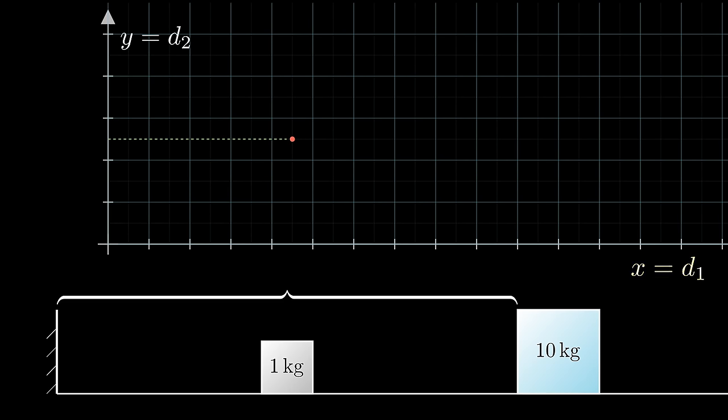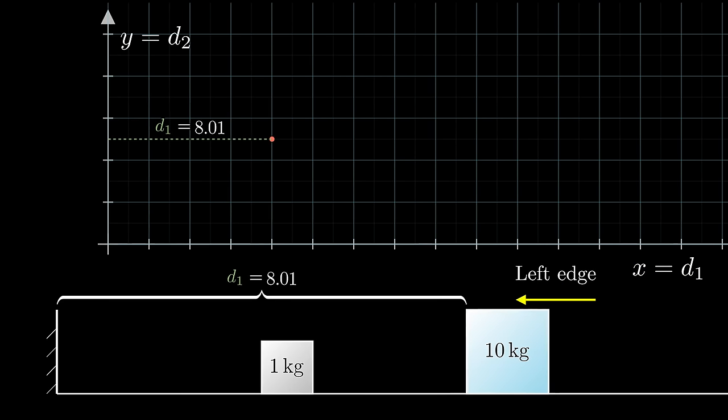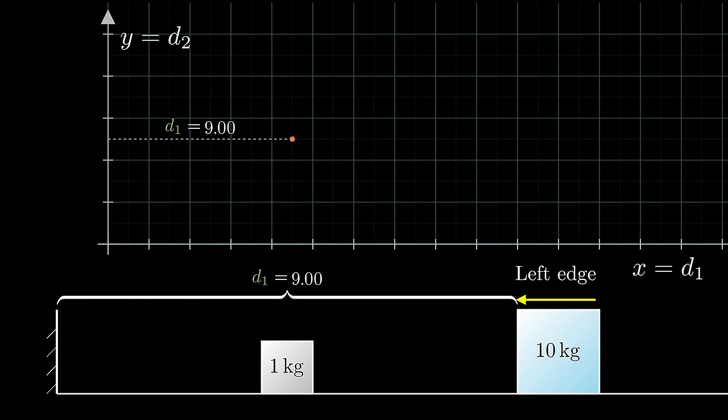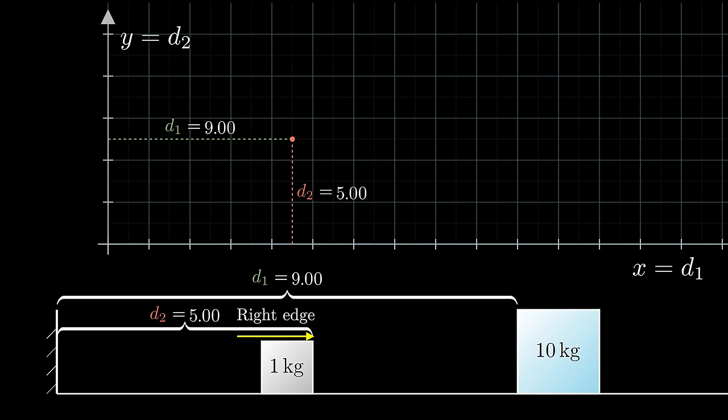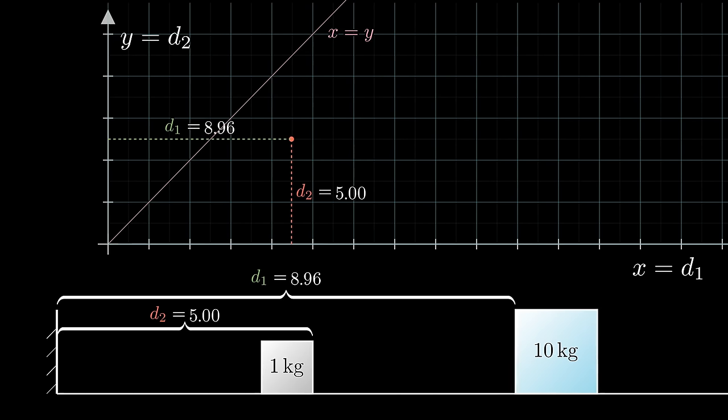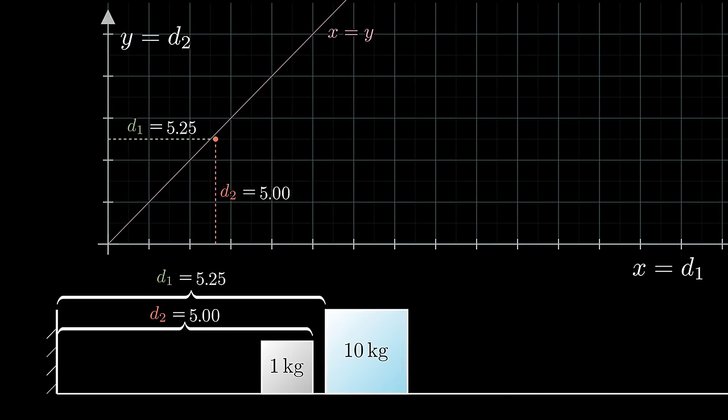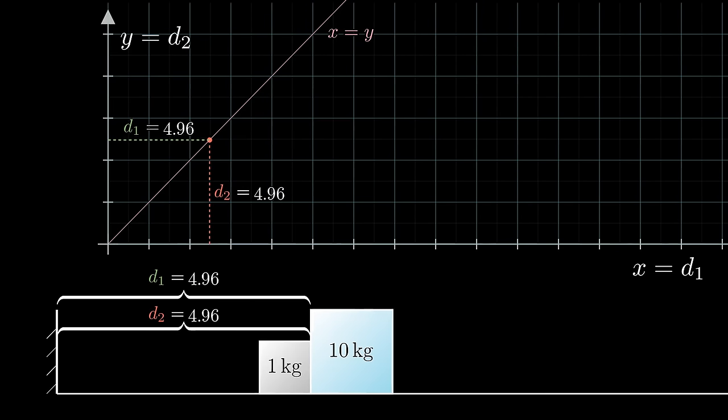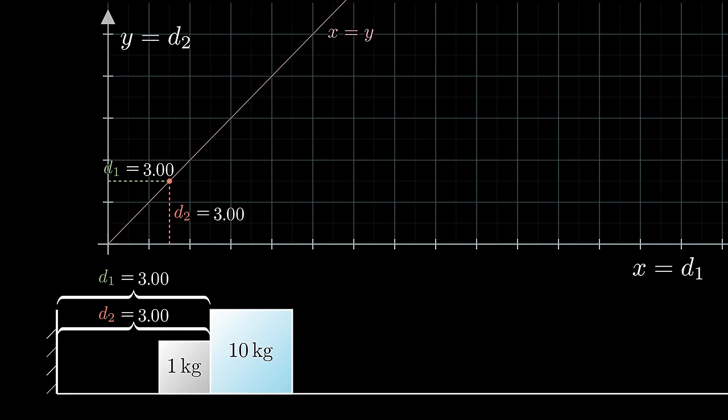Specifically, let the x-coordinate of a 2D plane represent the distance from the wall to the left edge of the first block, what I'll call d1, and let the y-coordinate represent the distance from the wall to the right edge of the second block, what we'll call d2. That way, the line y equals x shows us where the two blocks clack into each other, since this happens whenever d1 is equal to d2.